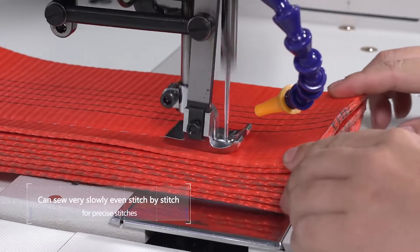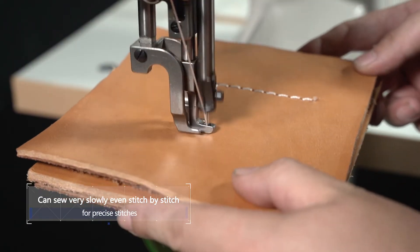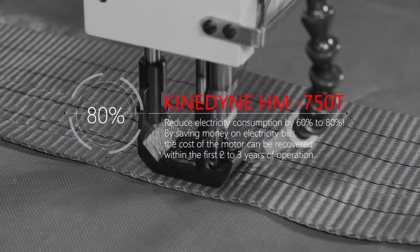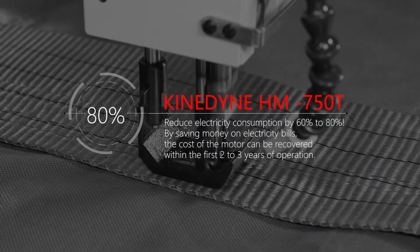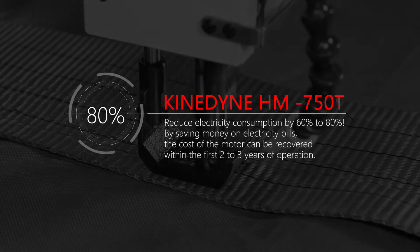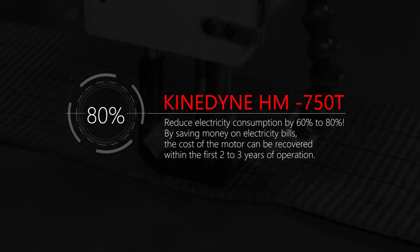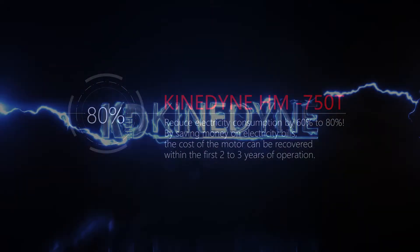Control speed very slowly, even stitch by stitch, for precise stitches. Reduce electricity consumption by 60% to 80%. By saving money on electricity bills, the cost of the motor can be recovered within the first 2-3 years of operation.